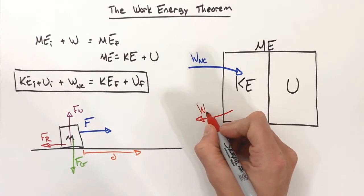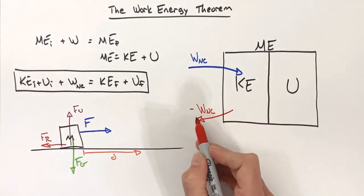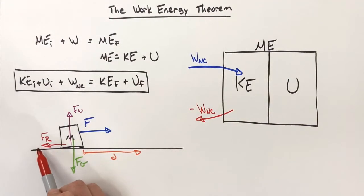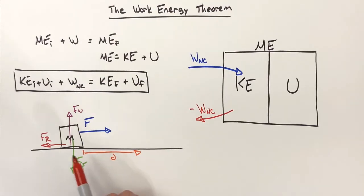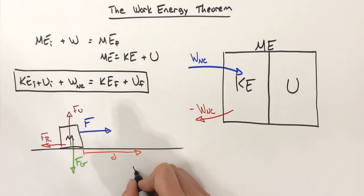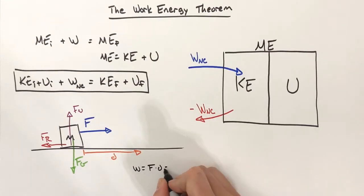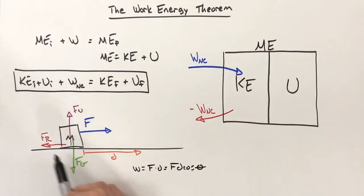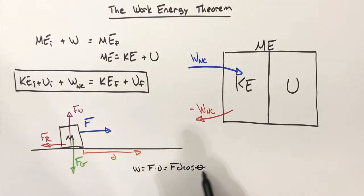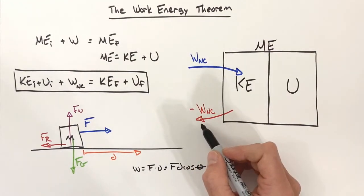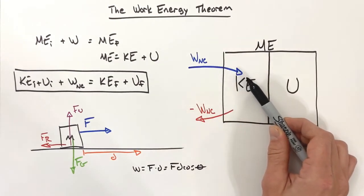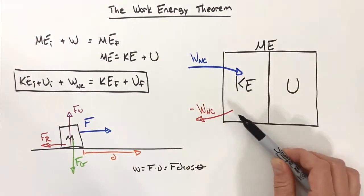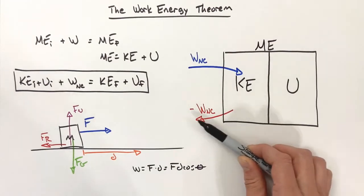Friction is also doing non-conservative work, and that non-conservative work is negative. The angle between friction and displacement is 180 degrees. Going back to our work equation — W = F·d = F·d·cosθ — if the force is in the opposite direction of displacement, cosine of 180 gives us negative one, so we get negative work done. So: positive non-conservative work adds to kinetic energy, and negative non-conservative work takes away from kinetic energy.